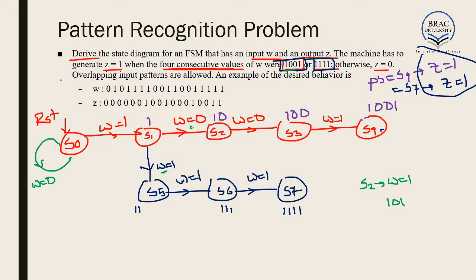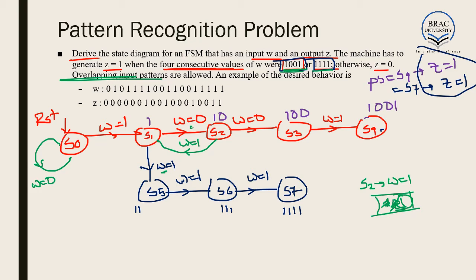Since we need to consider overlapping patterns, we think about how many digits we can salvage. Can we salvage 1 0 1? No. The most recent two bits 0 1? No, none of the patterns have 0 1 at the beginning. But the most recent single 1? Yes — both patterns have 1 at the beginning. So from S2, if W equals 1, we move to S1. Then from S3, if W equals 1, we get 1 0 0 1 and move to S4.